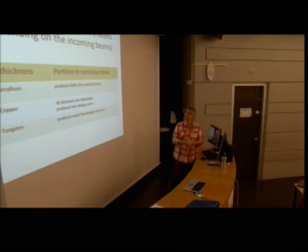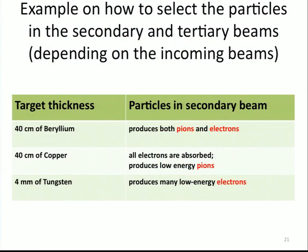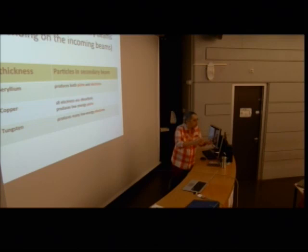Here is an example of how you can select the type of particles in your secondary or tertiary beam, depending on the incoming particles. If you put 40 centimeters of beryllium target, you produce both pions and electrons. If you put copper, you get only pions because copper absorbs all the electrons. If you use tungsten instead, you produce many electrons, but all the pions are absorbed. The electrons here will have low energy. Depending what you want to do, you can play with the nature of the target and its thickness.